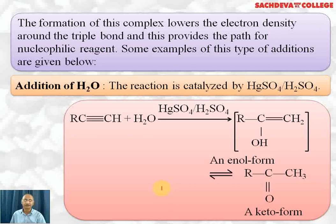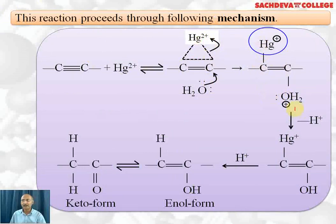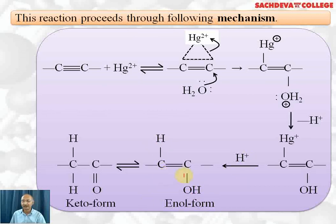The reaction proceeds via the following mechanism. In the first step, the mercuric ion adds to the alkyne, forming an unstable intermediate. Water attacks this intermediate; Hg²⁺ becomes Hg⁺, and water attaches to one carbon. The oxygen donates its lone pair to the carbon, acquiring a positive charge. Being unstable, the oxonium ion loses H⁺, forming a C–OH bond while the double bond remains and Hg⁺ is still attached. In the next step, H⁺ replaces Hg⁺. This gives the enol form. The H then shifts and the double bond shifts, giving the keto form — this is keto-enol tautomerism.